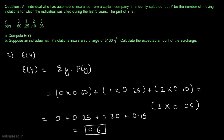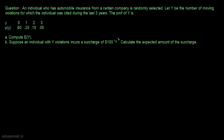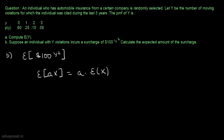Now let's move to part B. Suppose an individual with Y violations incurs a surcharge of 100Y². We have to calculate the expected amount of the surcharge, which means we have to calculate the expected value of 100Y². We know that in general E(aX) = a·E(X), and since Y² is also a random variable, we can write E(100Y²) = 100·E(Y²).